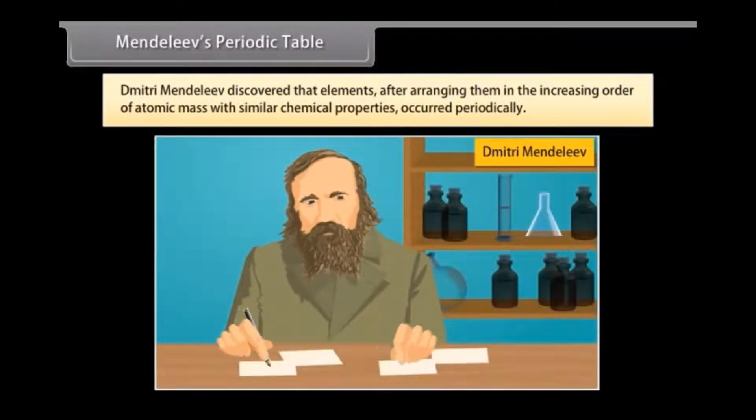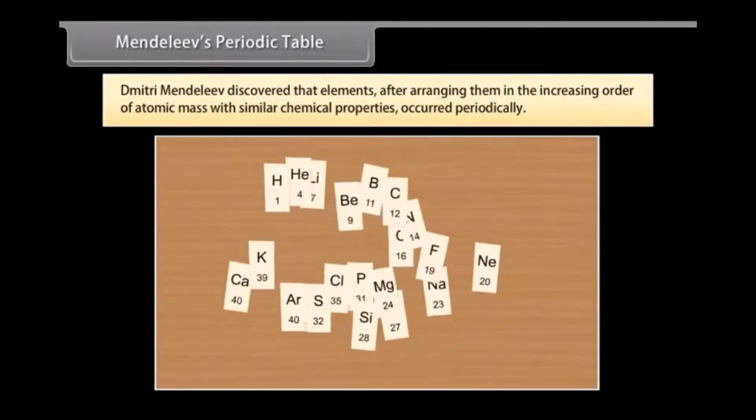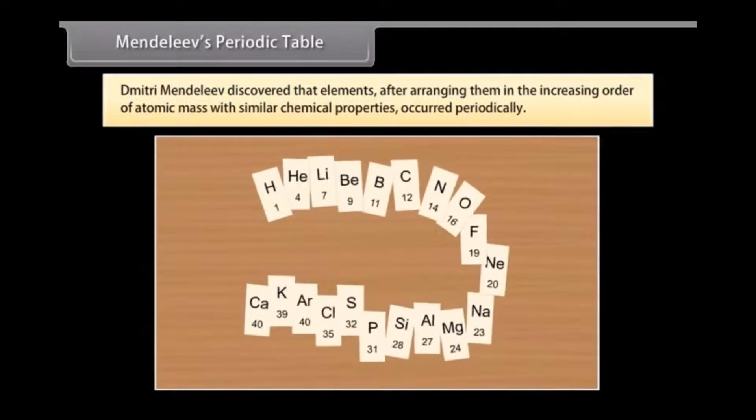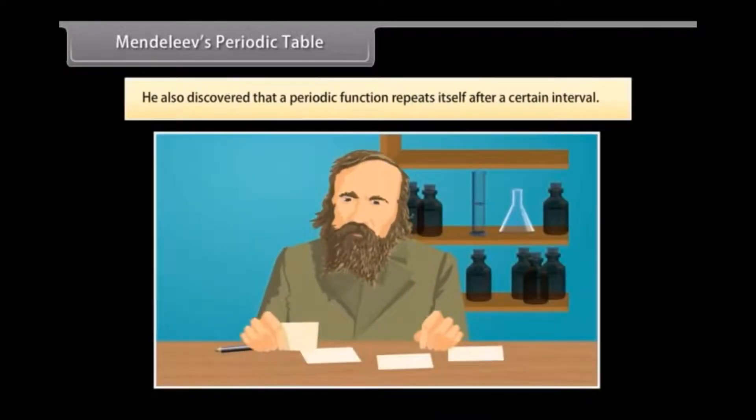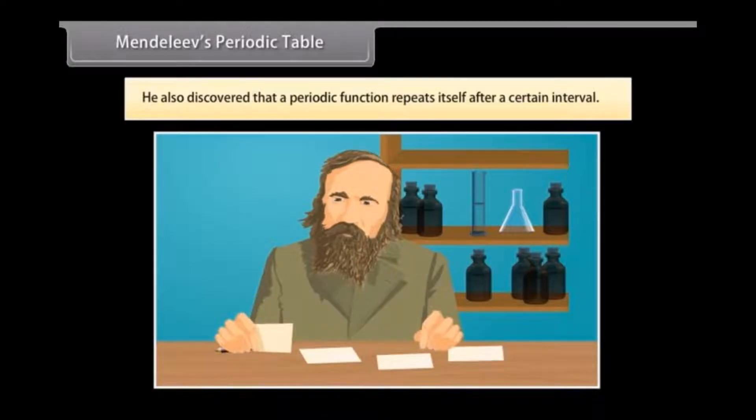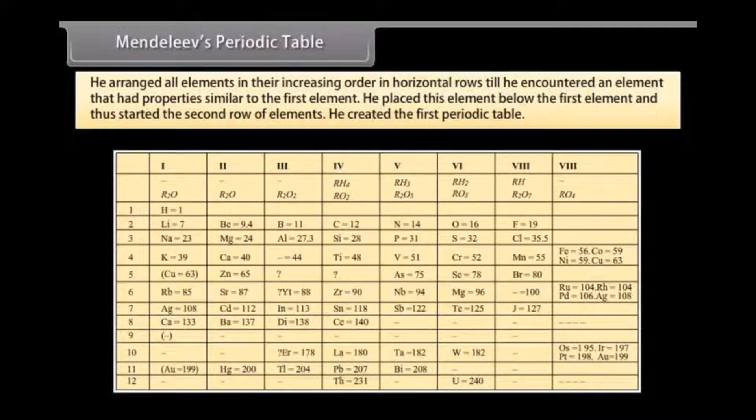Mendeleev's periodic table. Dmitry Mendeleev, a Russian chemist, discovered that elements, after arranging them in the increasing order of atomic mass with similar chemical properties, occurred periodically. In 1869, he stated this observation in Mendeleev's periodic law. He also discovered that a periodic function repeats itself after a certain interval. Hence, according to the periodic law, the chemical and physical properties of elements repeat themselves after certain intervals when they are arranged in the increasing order of their atomic mass. A tabular arrangement of the elements based on the periodic law is called periodic table.